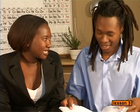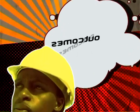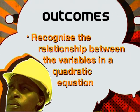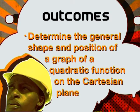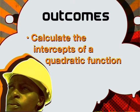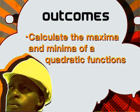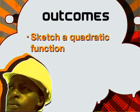What are we going to work on today, Debohom? Graphs of quadratic functions. Can I have a look at your worksheet before we get started? Sure. By the end of the lesson, you should be able to recognize the relationship between the variables in a quadratic equation and the graph of a quadratic function, determine the general shape and position of a graph on the Cartesian plane, calculate the intercepts, and calculate the maxima or minima and hence sketch a quadratic function.